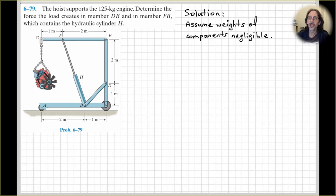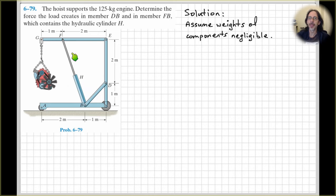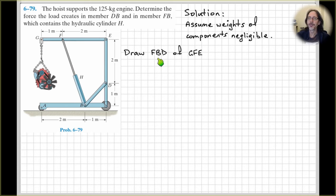We're not given any information about the masses of any of the components, so we're going to have to assume that the weights of the components are negligible. And as we often need to do with frames and machines analysis problems, we need to look for two-force members — and there are only two-force members if the weights of the members are negligible. So we'll make that assumption and draw a free body diagram of GFE to start with.